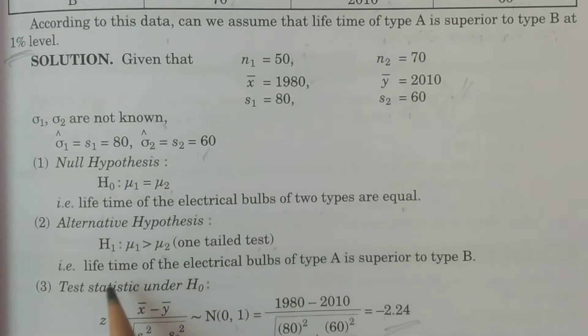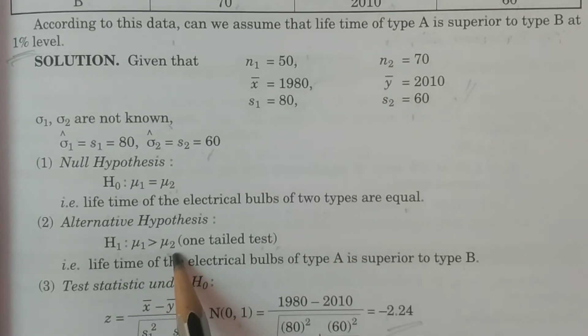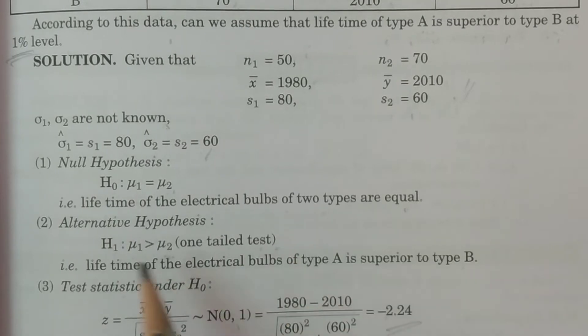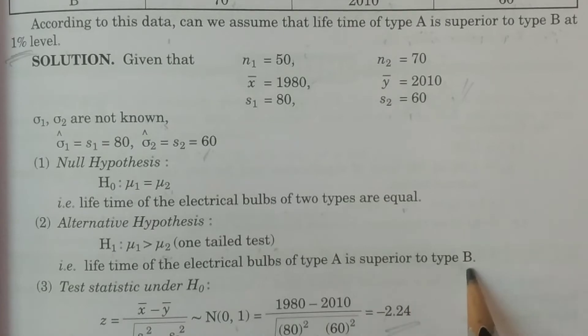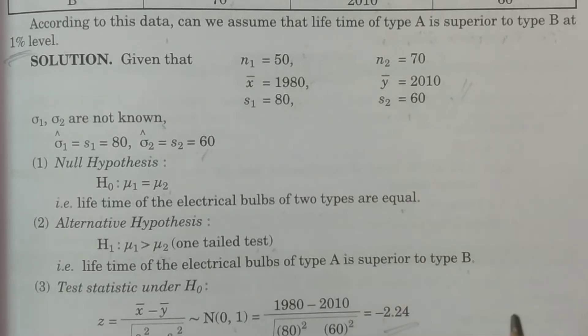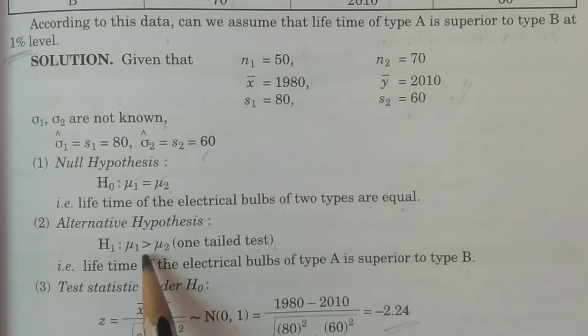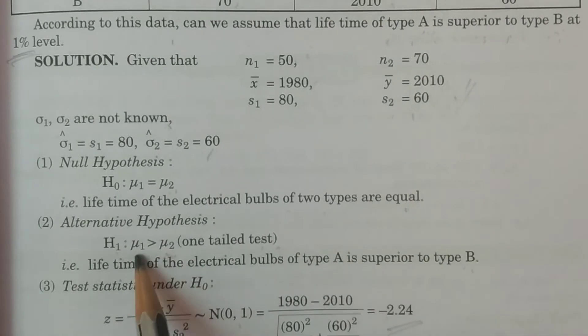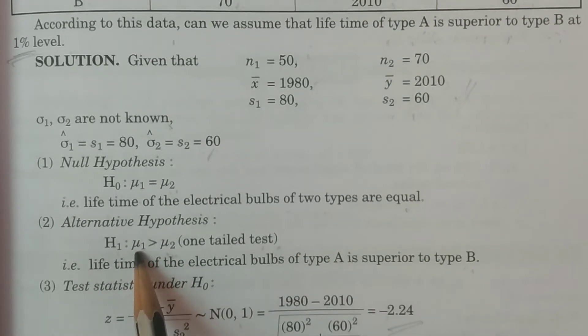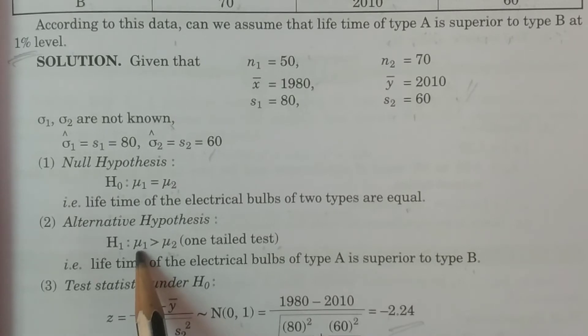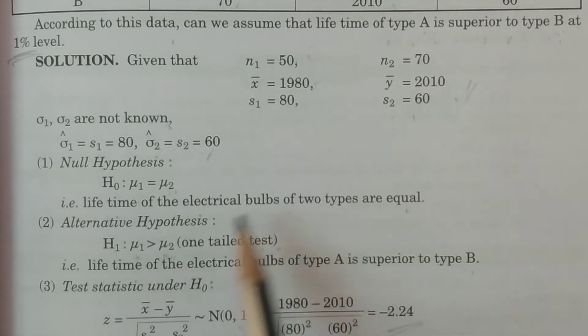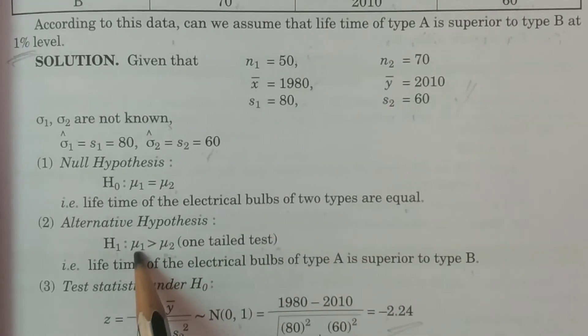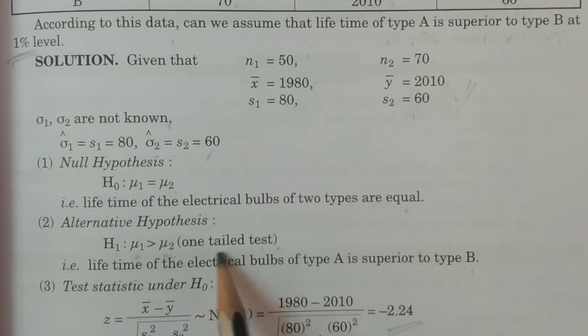Alternative hypothesis: H1: mu1 greater than mu2. One-tailed test. Lifetime of the electrical bulbs of type A is superior to type B. Type A superior to type B. Mu1 is type A electrical bulb lifetime. Mu2 is type B electrical bulbs lifetime. If A is superior, mu1 greater than mu2. It is one-tailed test.